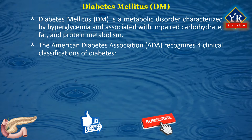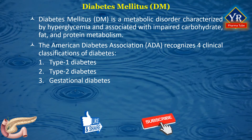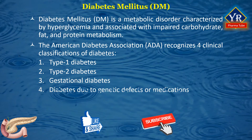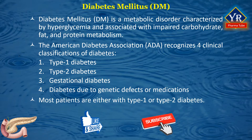The American Diabetes Association recognizes four clinical classifications of diabetes: number one, type 1 diabetes; number two, type 2 diabetes; number three, gestational diabetes; and number four, diabetes due to other causes such as genetic defects or medications. Gestational diabetes is usually diagnosed during pregnancy and occurs more often in women who are obese, have a family history of diabetes, and are members of a high-risk ethnic group.